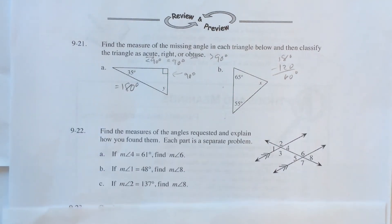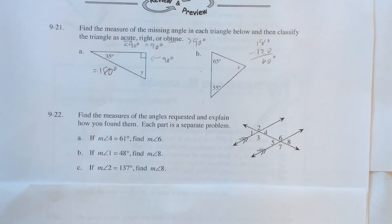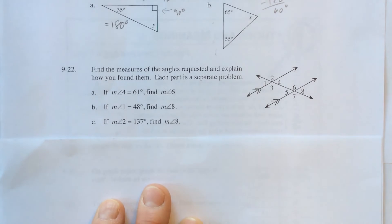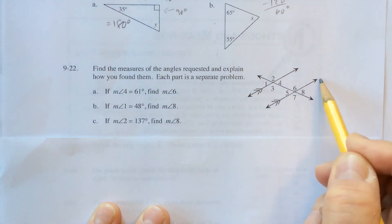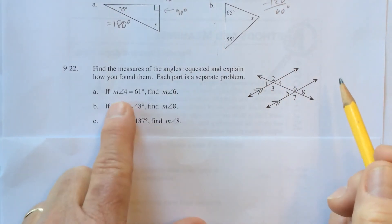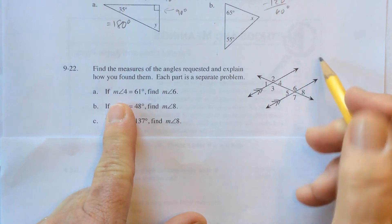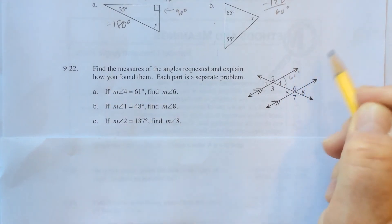Let's take a look at number 22. Find the measure of the angles and explain how you found them. Each part is a separate problem. So as you can see, the numbers change. If you look at this, we have two parallel lines marked and a transversal. If the measure of angle 4 is 61 degrees, find the measure of angle 6.